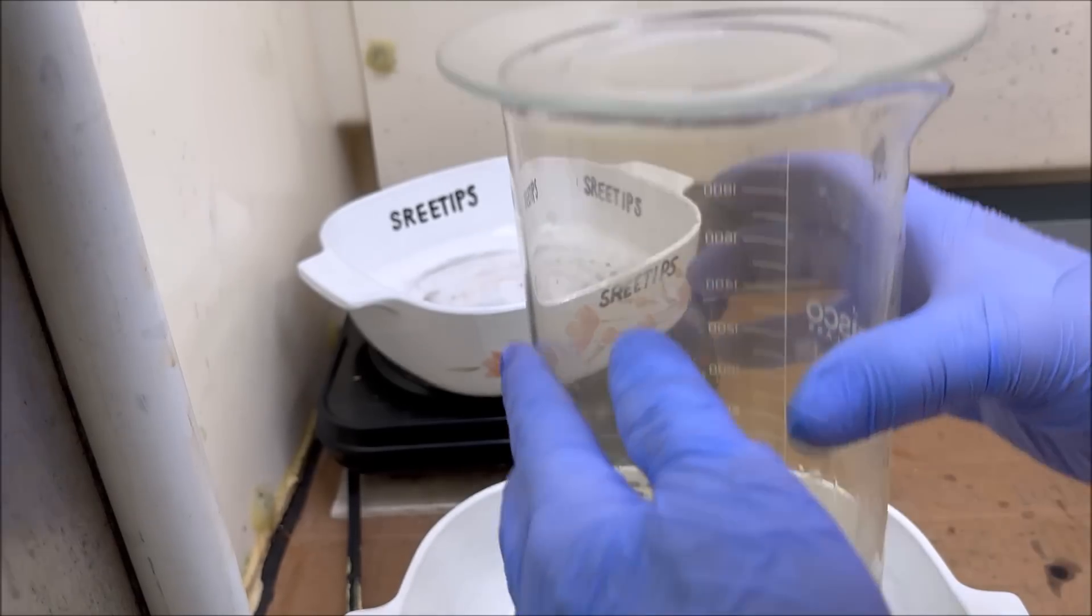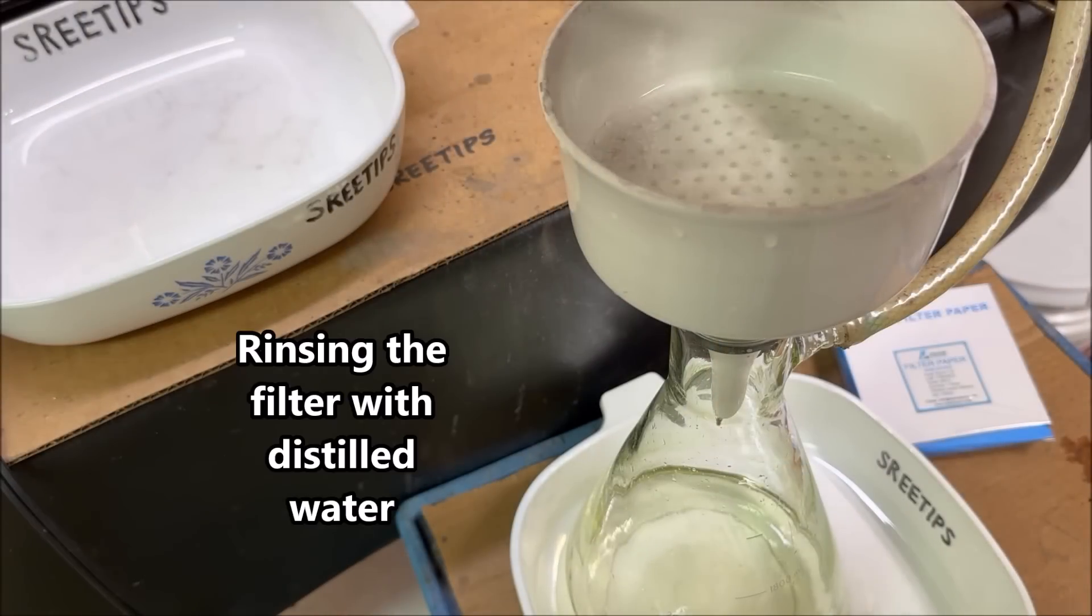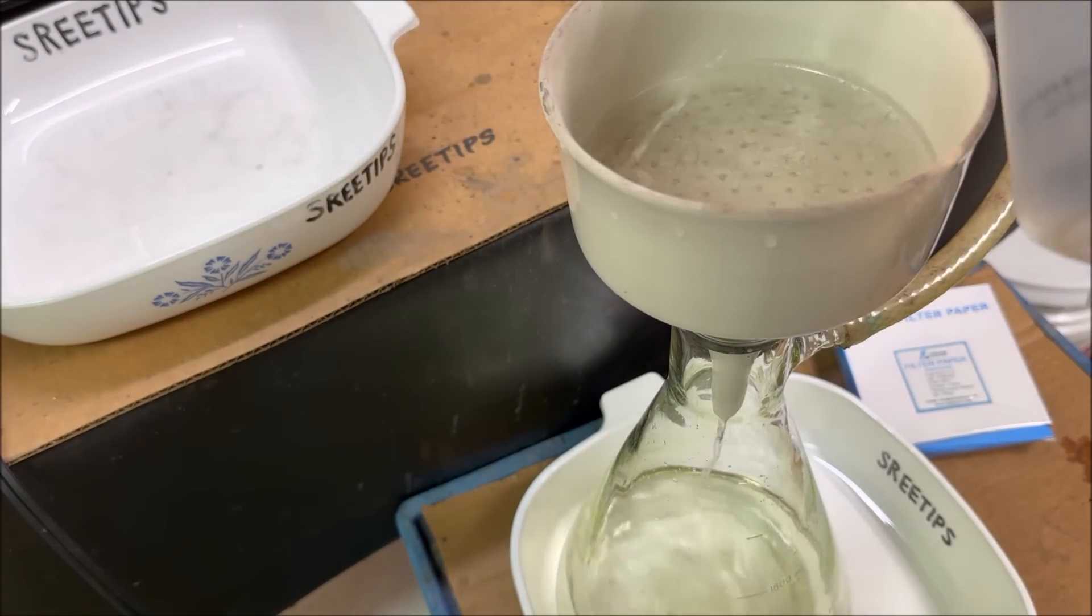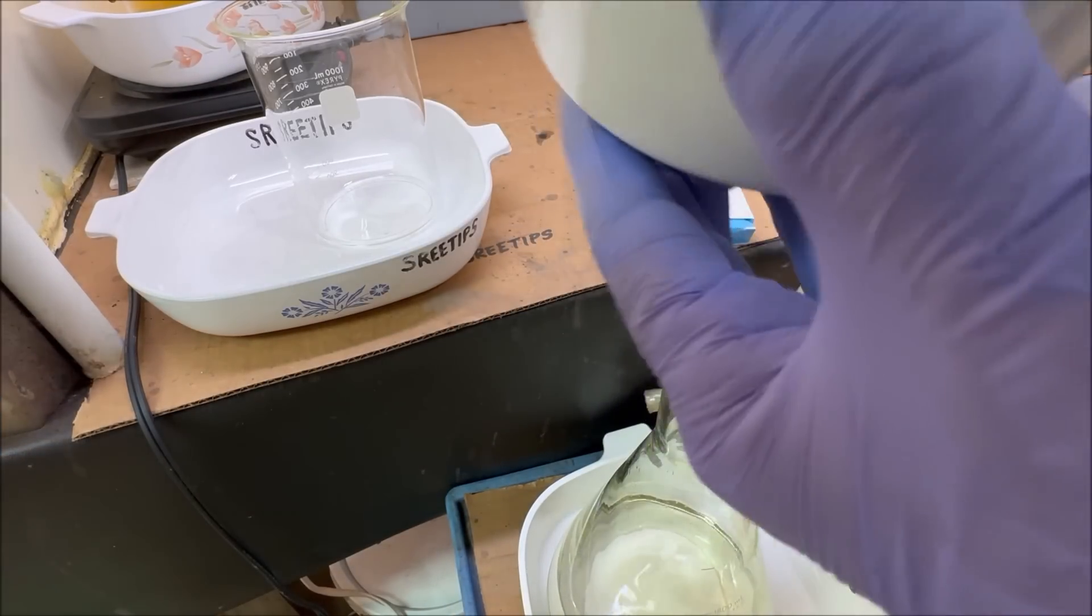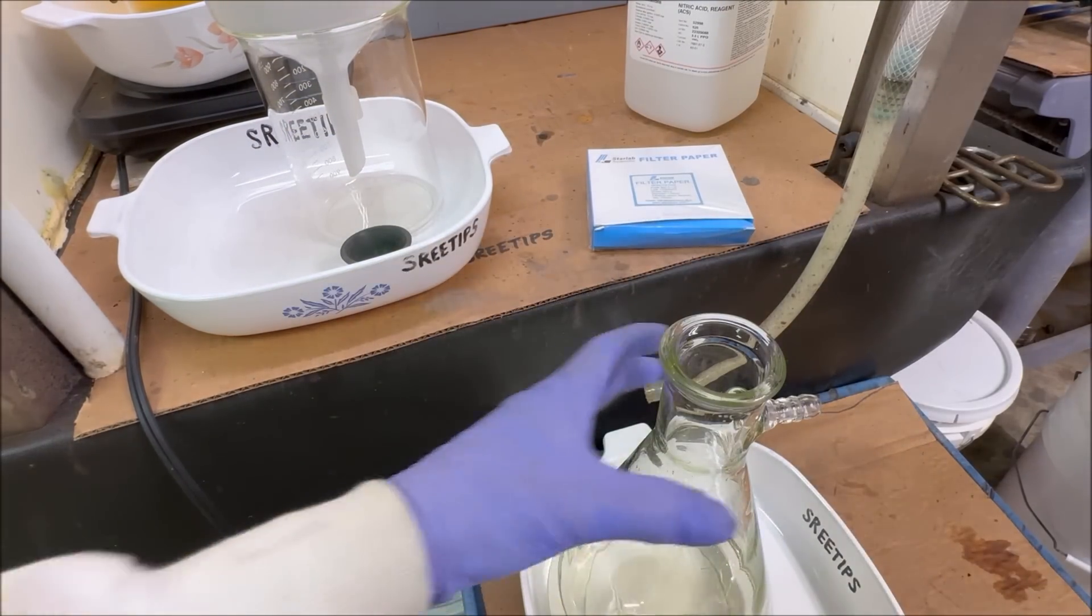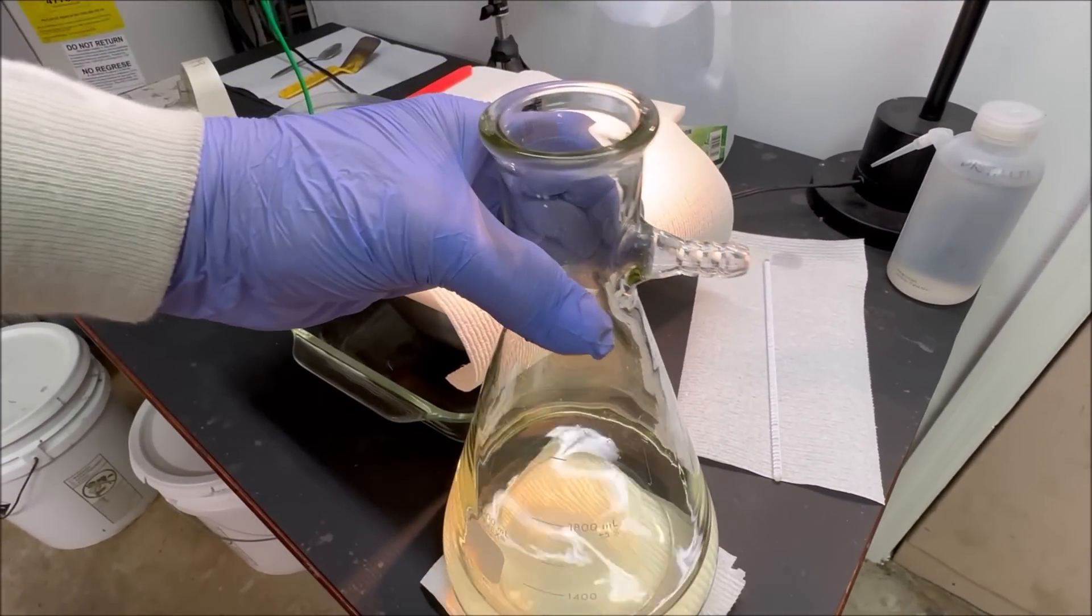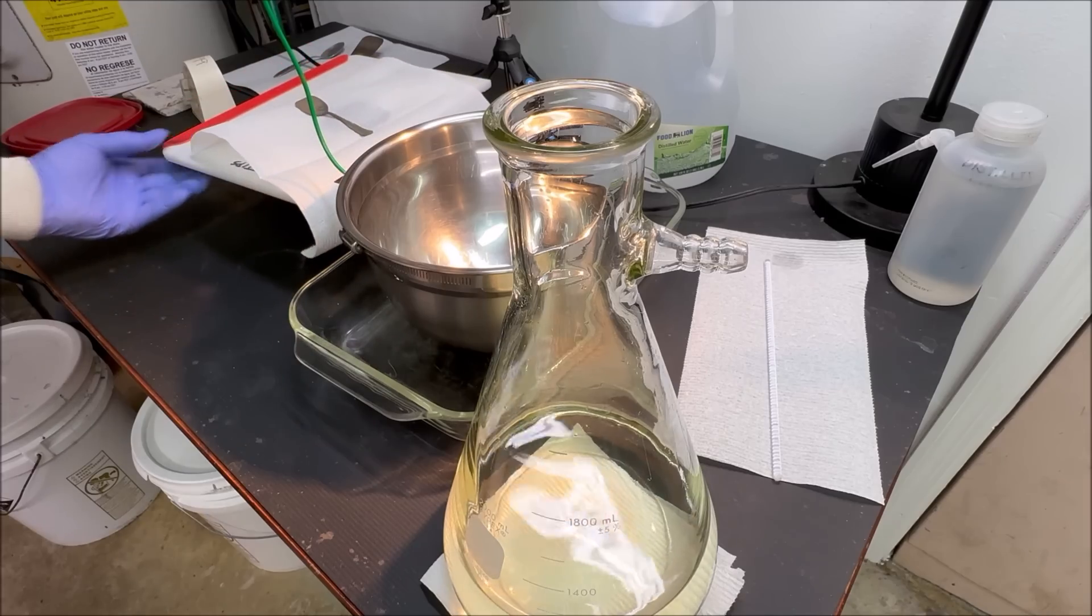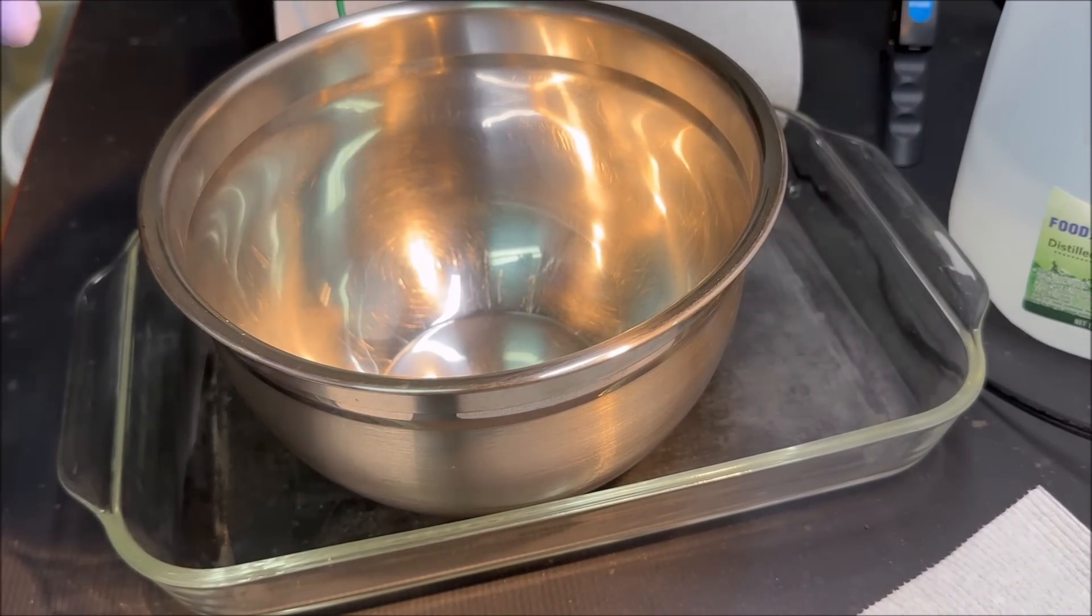Alright, we've got everything pulled through this filter. There's a little bit of silver in there, we'll save that filter and recover that silver later. For now, let's go ahead and take our electrolyte over here, remove the cover, set it over here out of the way, and now we're going to pour the electrolyte directly into our stainless steel bowl.